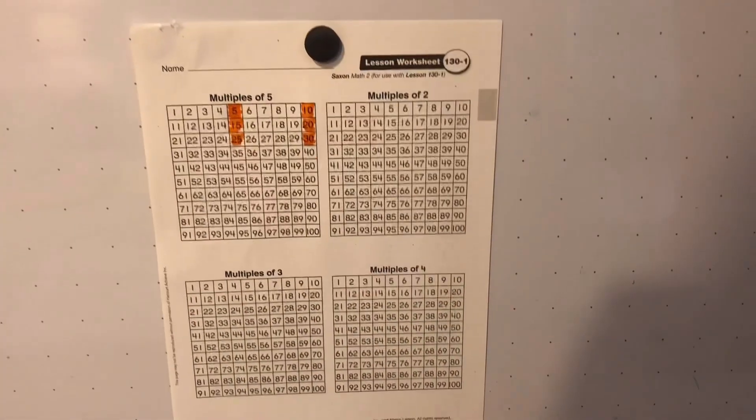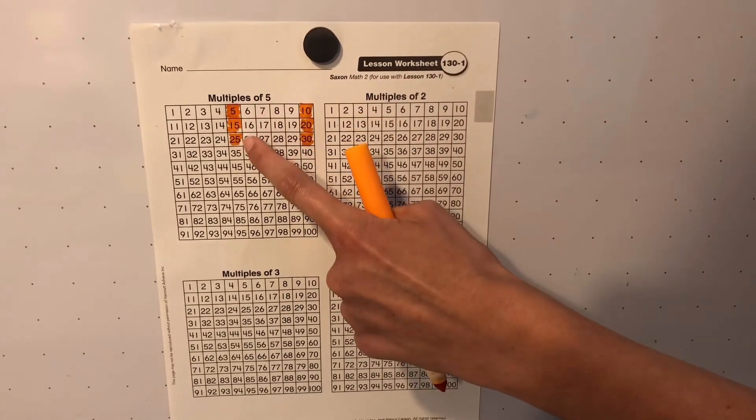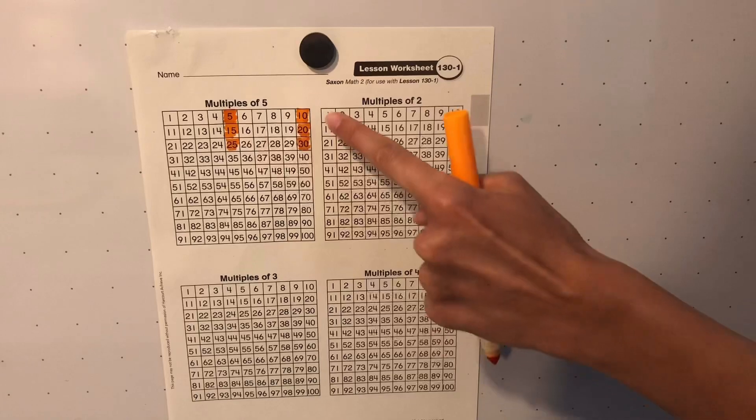I'm going to stop there. You're going to notice that a pattern is forming. So when I'm multiplying times five, I have my row that ends in five and my row that ends in zero.